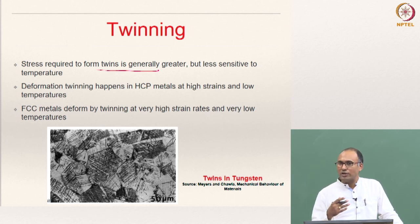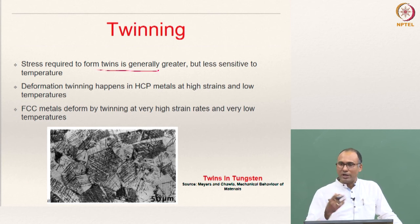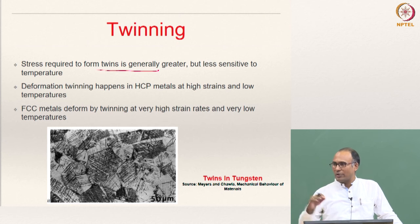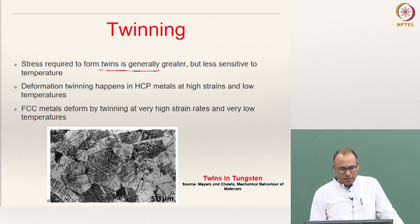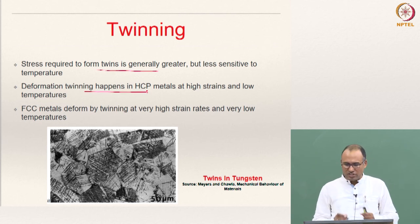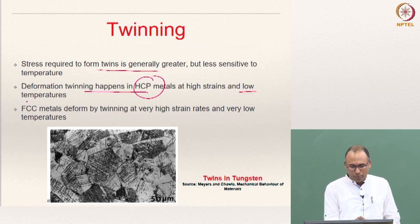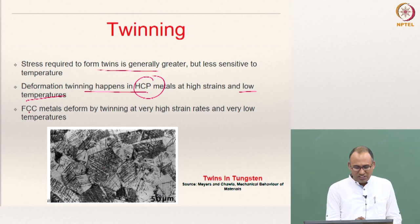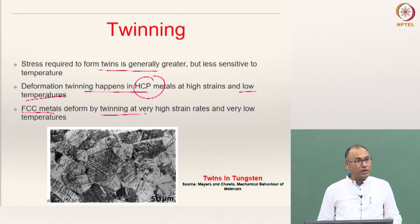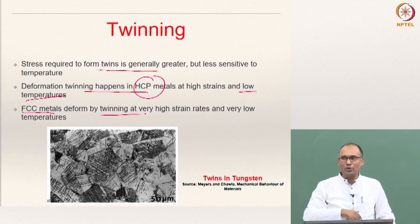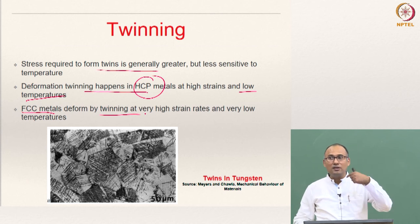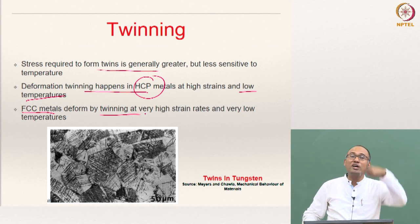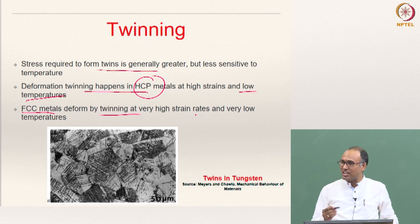The stress required to cause slip is usually much smaller than for twinning. In FCC materials particularly, the stress required to cause twinning is much higher at both room and high temperatures compared to slip through dislocation motion. Deformation twinning is usually the mechanism for plastic deformation in HCP metals at high strain rates and low temperatures. FCC metals also deform by twinning when loading rate is very high and temperature very low, because at low temperatures the shear stress required for dislocation slip becomes much higher.